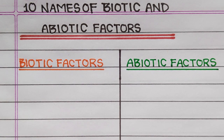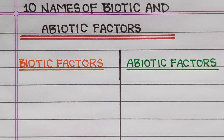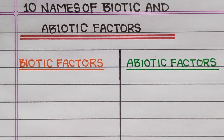Hello everyone, welcome to my channel. Biotic factors are living things and abiotic factors are non-living things. In this video I will write 10 names of biotic and abiotic factors.